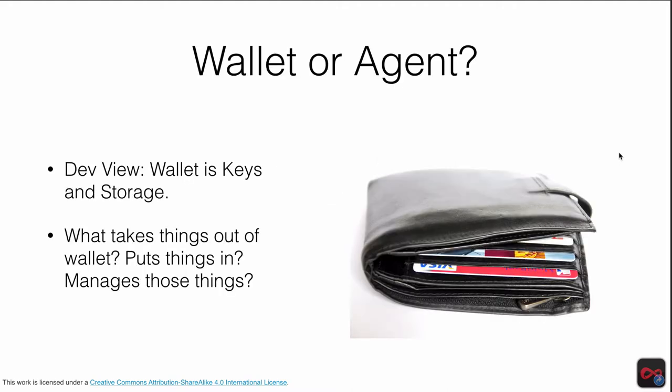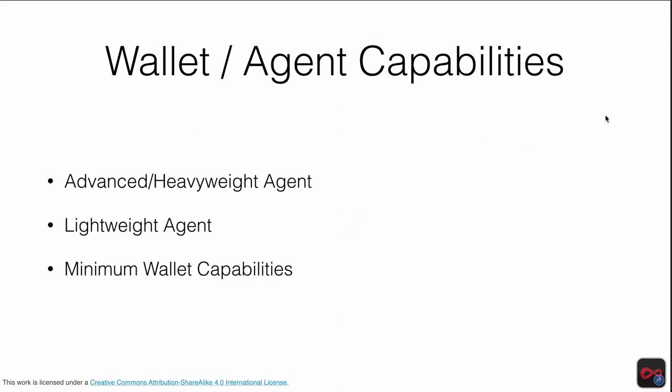As I mentioned, the dev view is that a wallet is just storage — it's just a place where you put stuff. But if you look at the physical world, there's certainly a lot more to my wallet than just storing stuff. I can put stuff in it and organize stuff, but the wallet isn't doing any of that — it's just holding it. The wallet itself does not really affect change in the world.